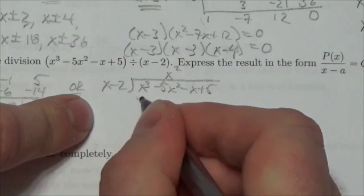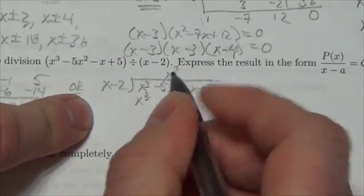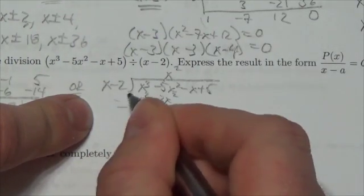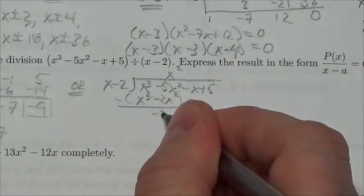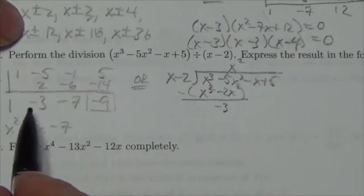I multiply by x squared - this becomes x cubed. I have to distribute to both terms, so minus 2x squared, then subtract. Negative 5 minus negative 2 equals negative 3. Notice the link to the synthetic division.